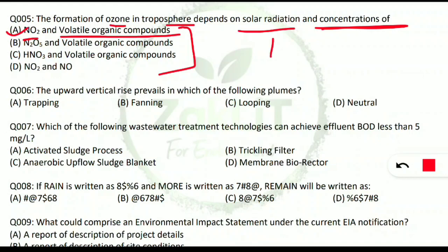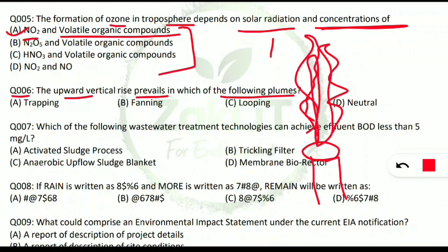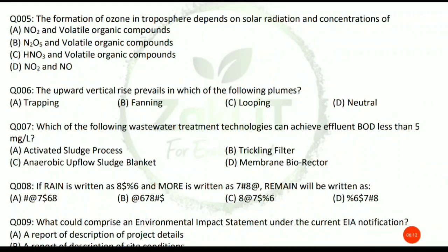Question 6 is from the Gaussian plume model. The question: upward vertical rise prevails in which of the following plumes? Assuming a chimney where gases are moving upward — not horizontally or downward — this upward movement of pollutants occurs in the case of a neutral plume. Option D is correct: neutral plume — upward vertical rise prevails.